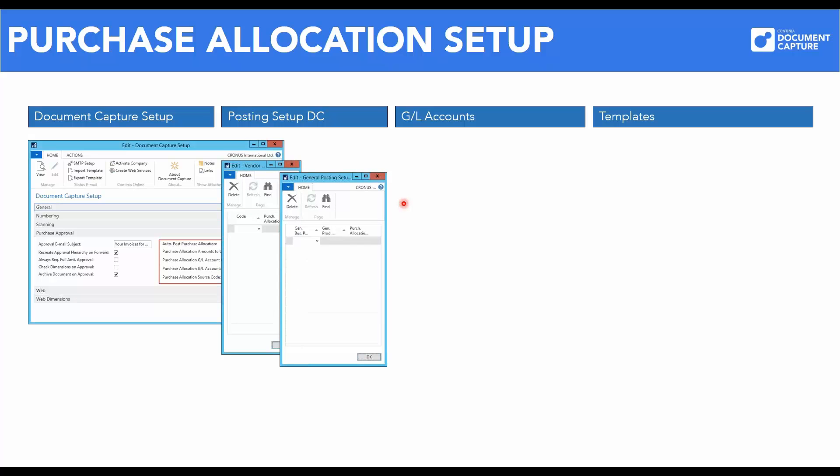When taking a look at the general posting setup DC and vendor posting group DC, we also find options relating to purchase allocation. These settings correspond to the well-known general posting setup in standard NAV. This setup exclusively relates to Document Capture purchase documents that are also being pre-allocated.